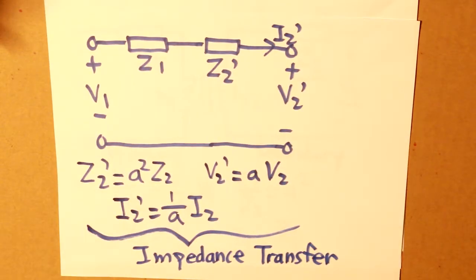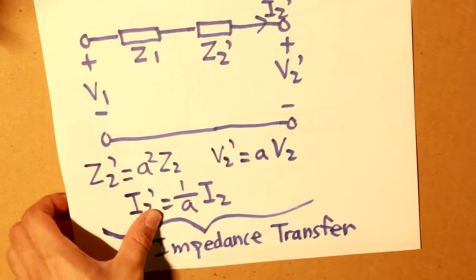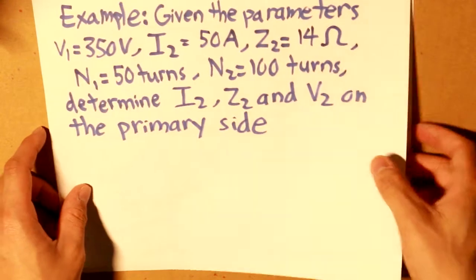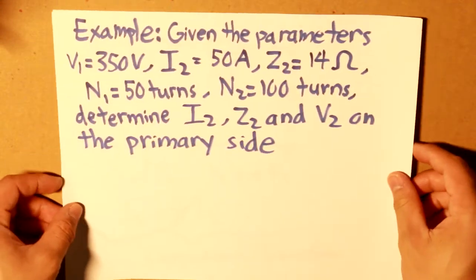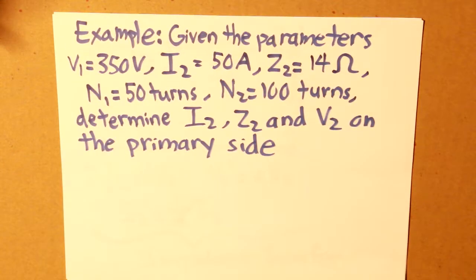And voila! So now let's do an example to prove that we've understood impedance transfer. So the example: given the parameters v1 is equal to 350 volts, the secondary current is 50 amps, the secondary impedance is 14 ohms, n1 is 50 turns, n2 is 100 turns, determine i2, z2, and v2 on the primary side.